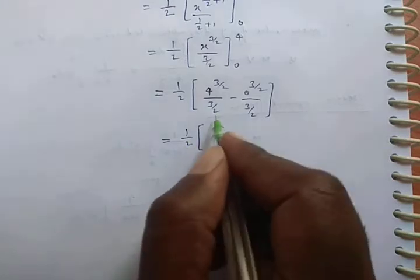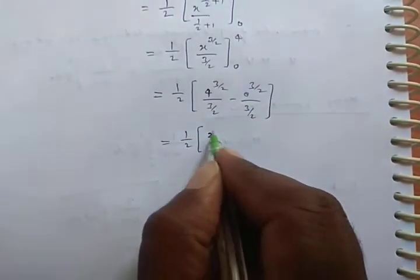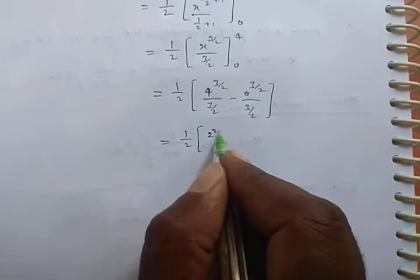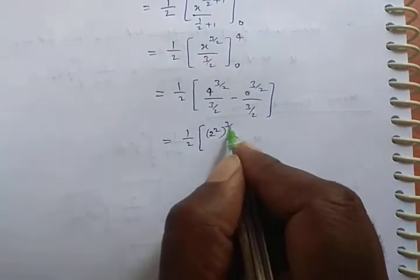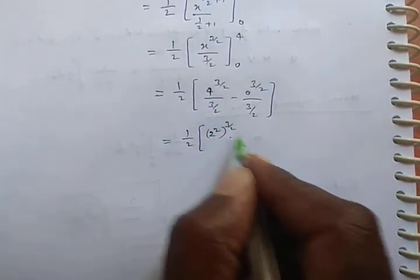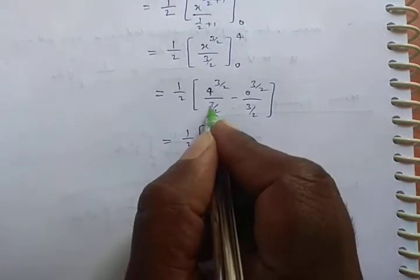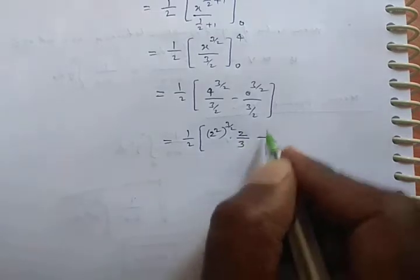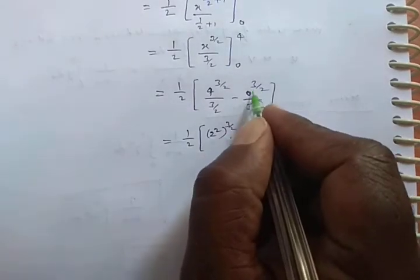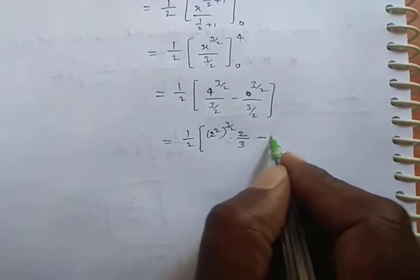Which is equal to 1/2, now substitute upper limit: 4^(3/2) ÷ (3/2) minus 0^(3/2) ÷ (3/2). Which is equal to 1/2, this can be written as 2², 4 as 2² power 3/2. This denominator fraction we write in the numerator by writing reverse, 2/3. This is 0 power anything is 0, 0 by anything is 0.